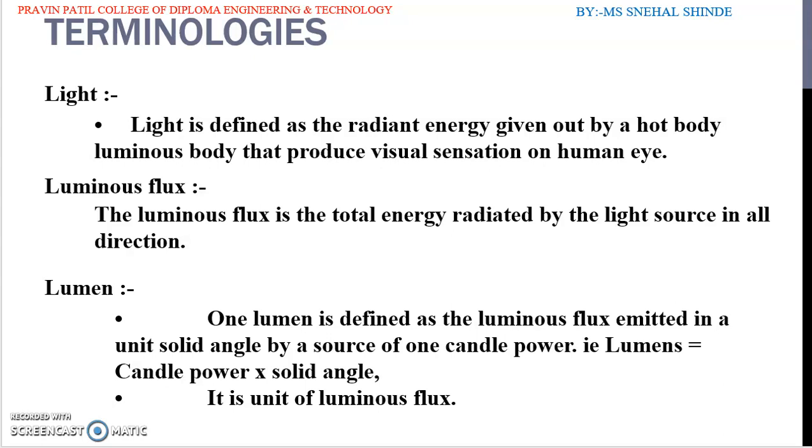Light is a form of radiant energy, natural source is the sun and artificial sources are the various forms of incandescent bodies depending upon their temperature. Light is defined as radiant energy from a hot body which produces the visual sensation upon the human eye. It is usually denoted by Q and expressed in lumen hours.